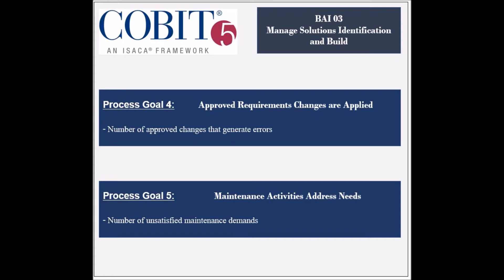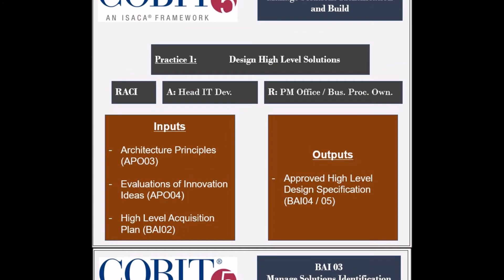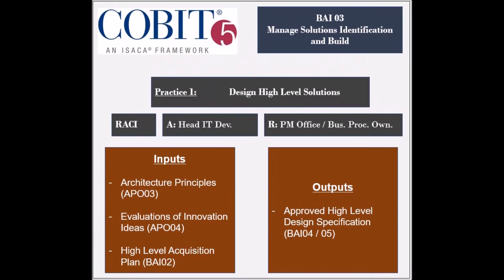The fifth and last process goal is to ensure that the maintenance activities address the business needs, and its achievement is measured by the number of unsatisfied maintenance demands. The process has 11 practices.